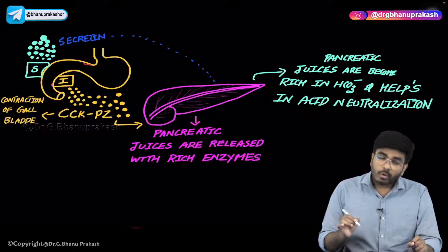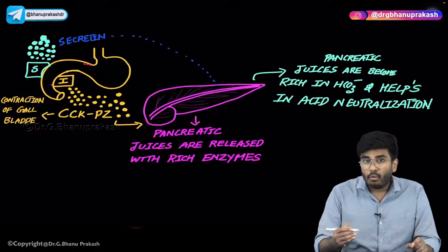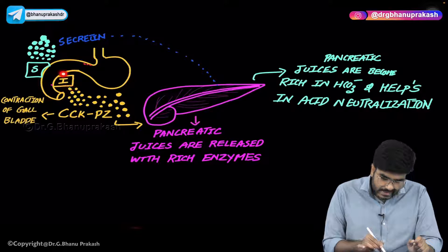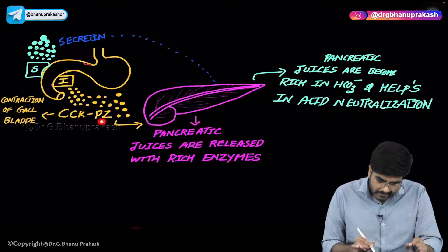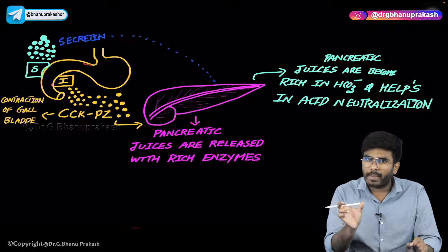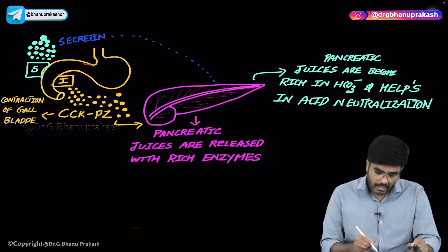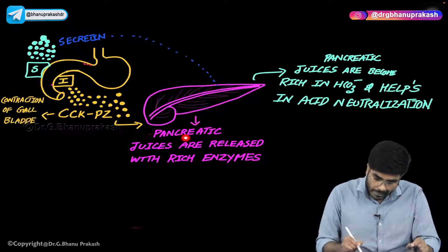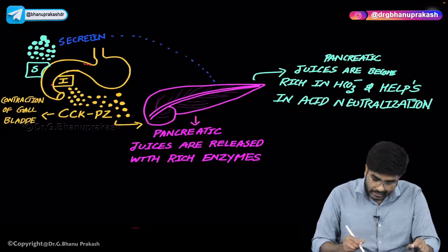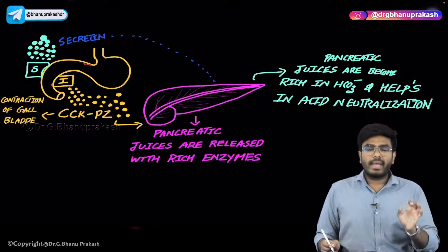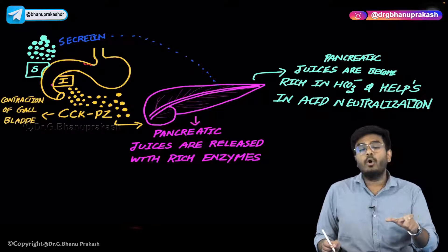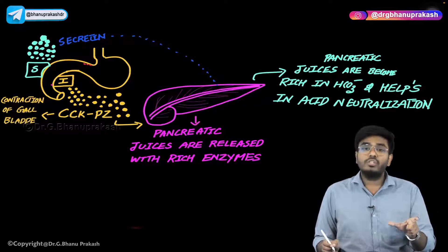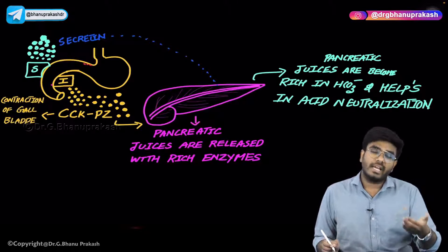The same pancreatic juices become rich in digestive enzymes when acted upon by cholecystokinin-pancreozymin (CCK-PZ). The I cell produces CCK-PZ — in the name itself, 'pancreozymin' refers to pancreatic enzymes ('zymin' = enzyme). When CCK-PZ acts on the pancreas, the pancreatic juices released are rich in digestive enzymes. So: secretin → pancreatic juices rich in bicarbonates (alkaline); CCK-PZ → pancreatic juices rich in digestive enzymes.